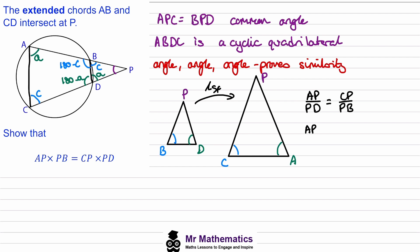So we get AP multiplied by PB will be equal to CP multiplied by PD.